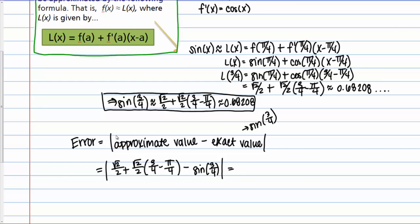Now of course to actually get a value for this error we have to actually know what the exact value of sine of 3 over fourths is. And we can get that from our calculator. So this expression here we found before to be 0.68208 plus some additional digits. And then if we subtract the sine of 3 fourths that is approximately 0.68164. And subtracting those and taking the absolute value we get 0.00044. And really to be completely correct I should put an approximate sign here.